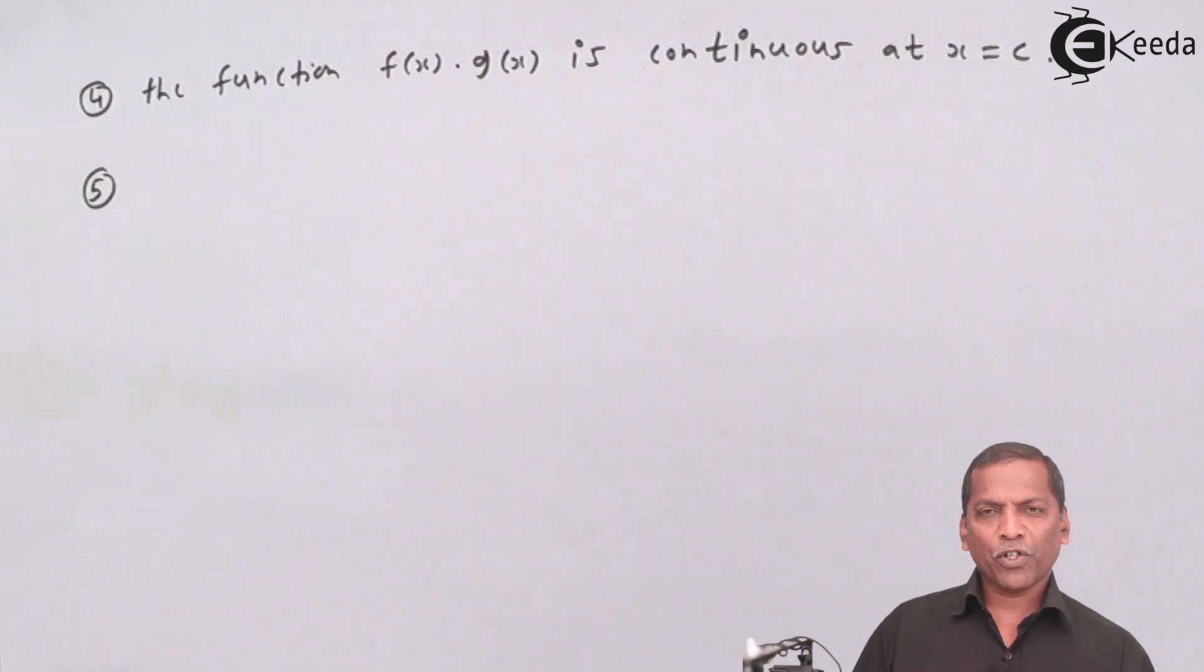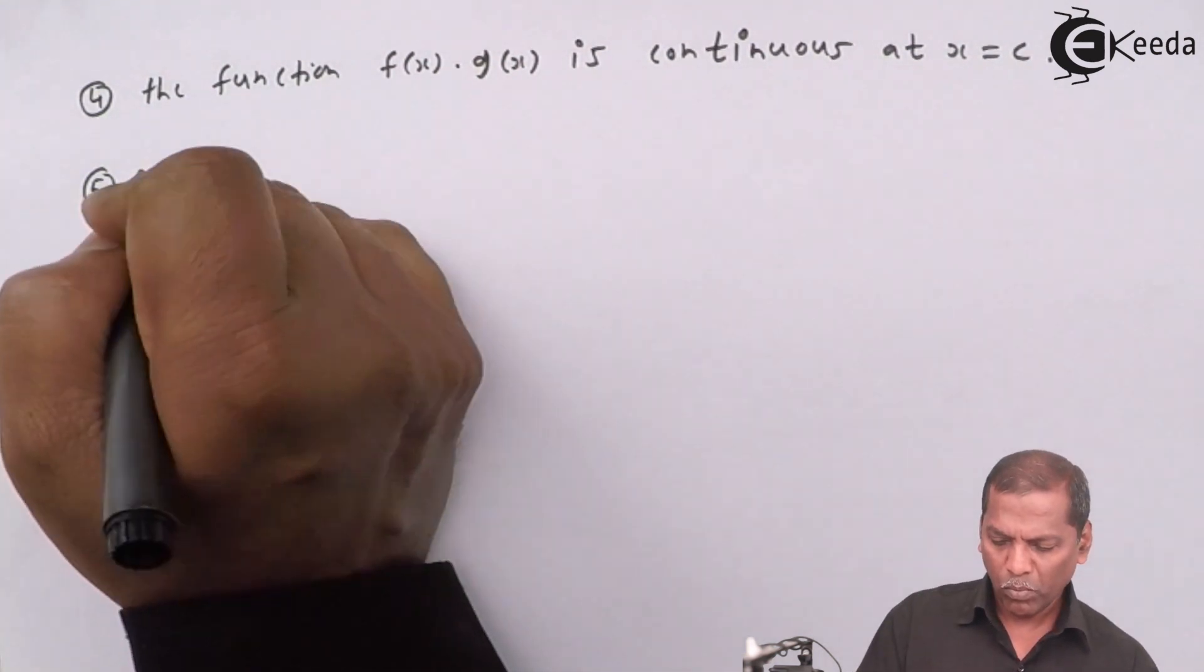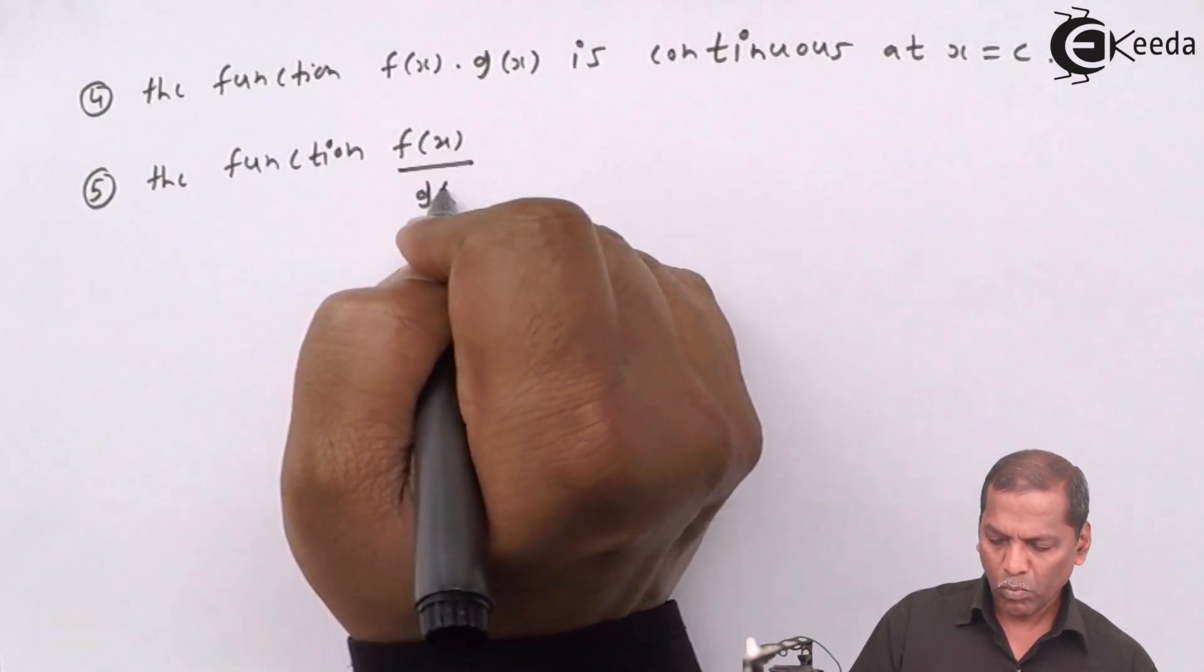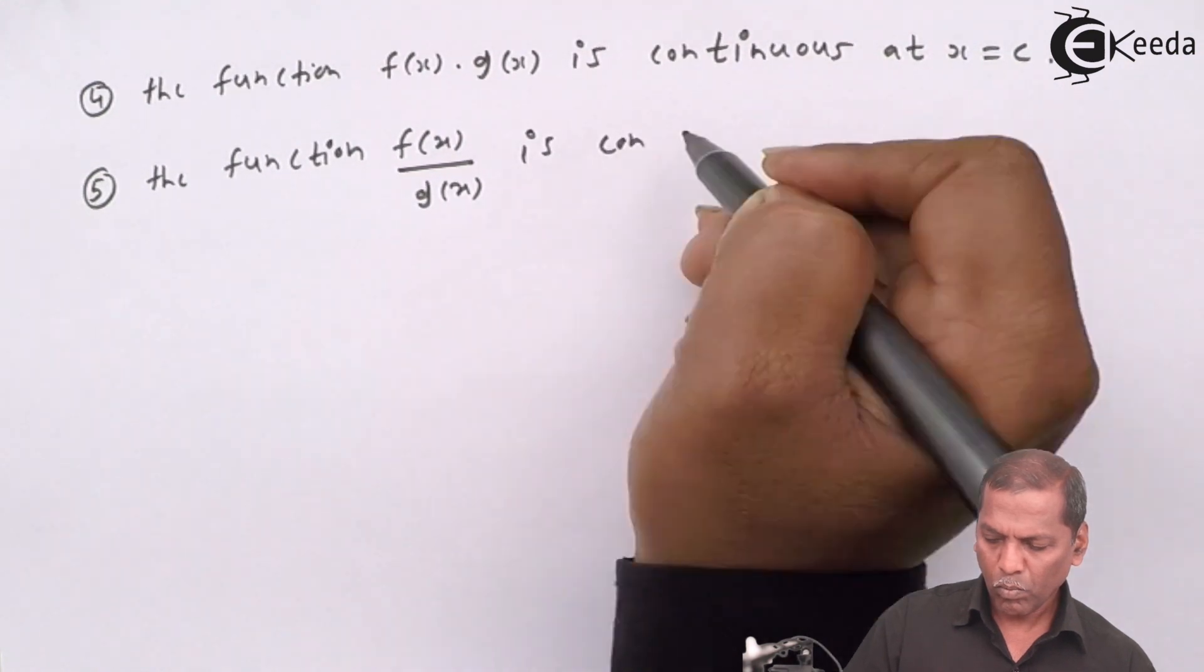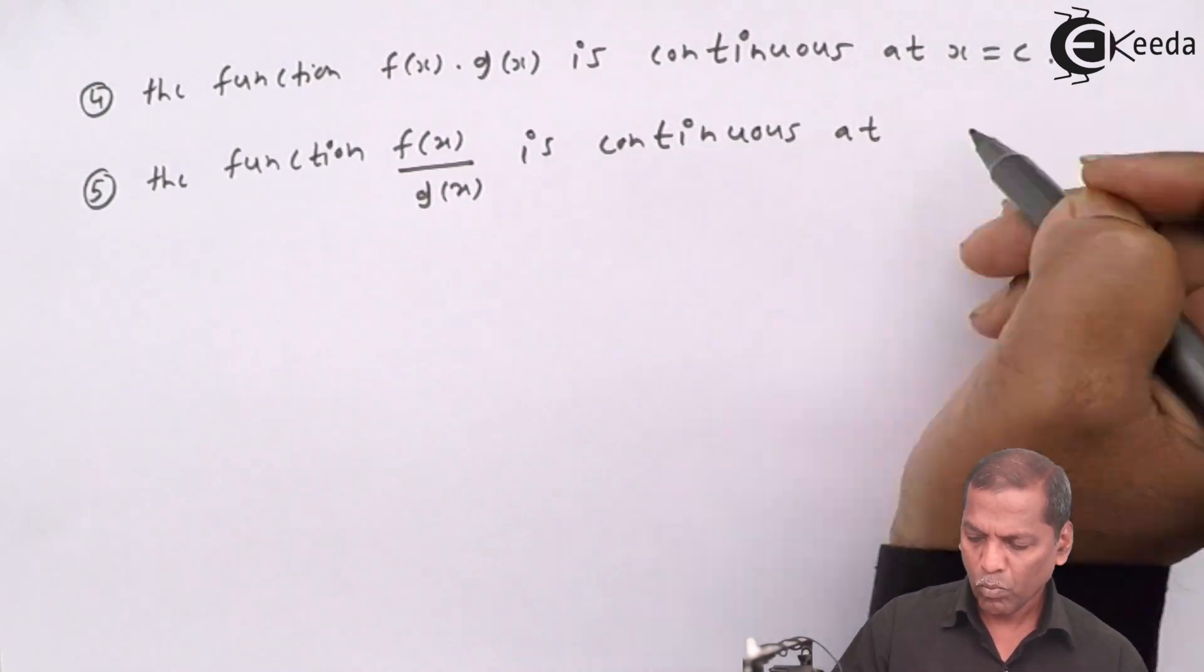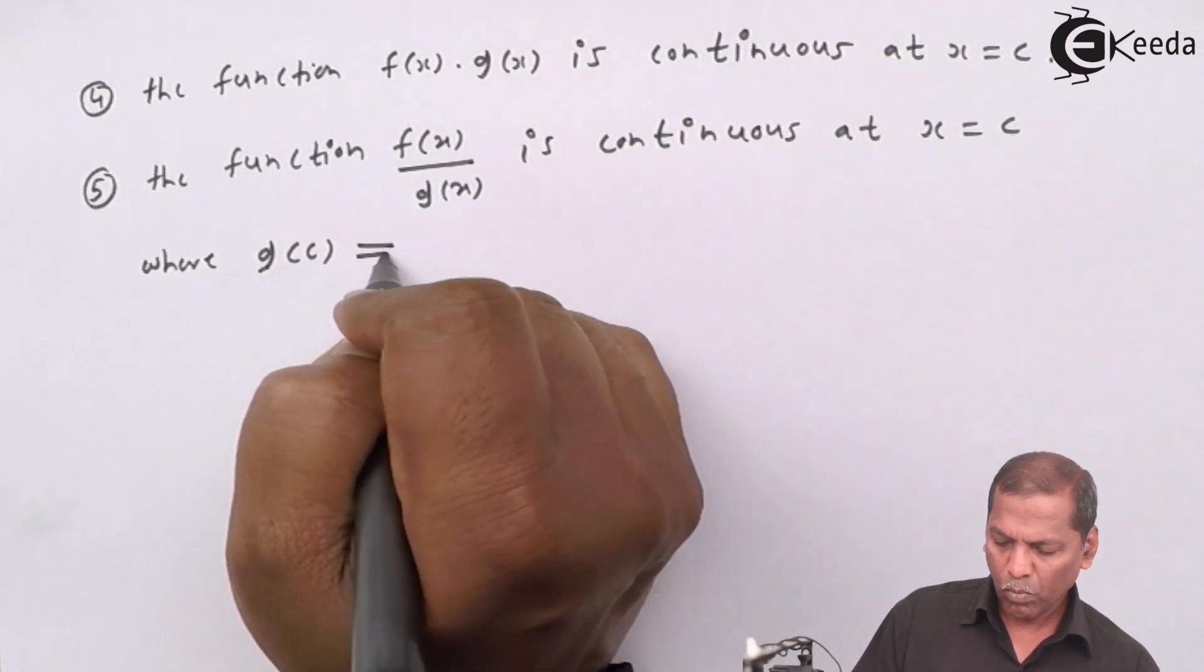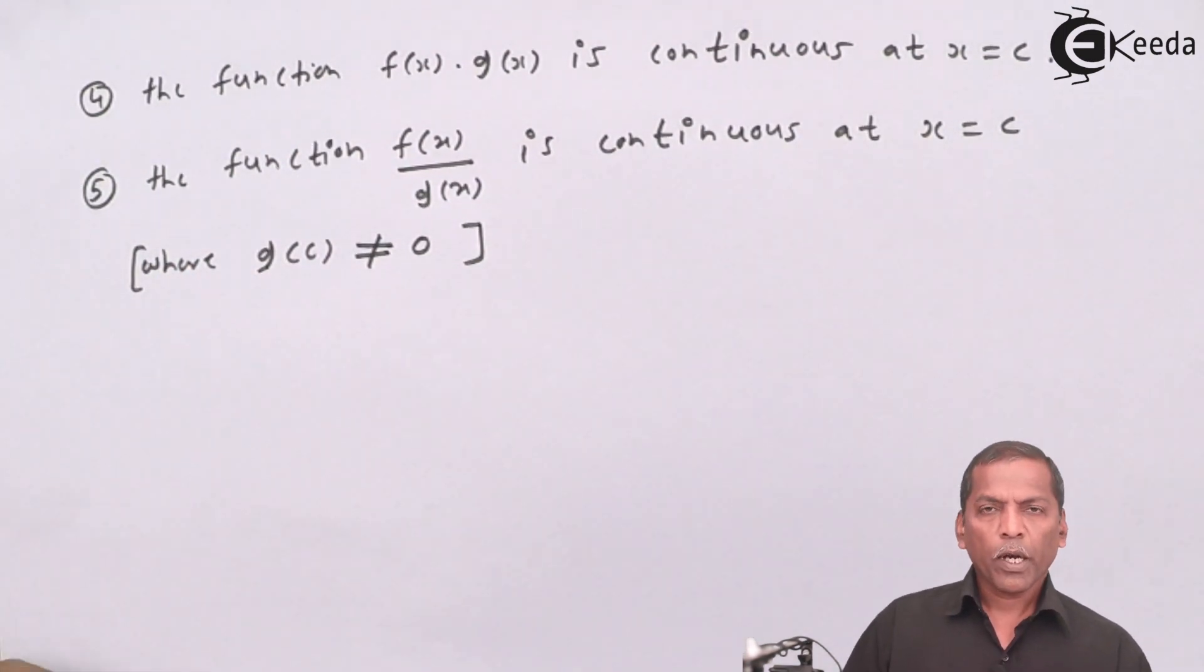Number five, the function f(x) upon g(x) is continuous at x equal to c where g(c) not equal to zero. That is, division of two continuous functions is also continuous.